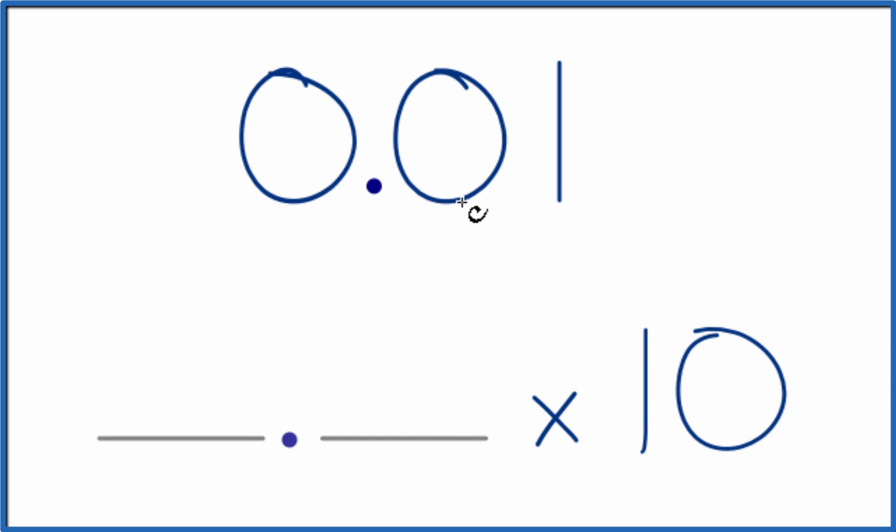Since we know that 0.01 is less than 1, we know that power is going to be negative. So that's a really good start.